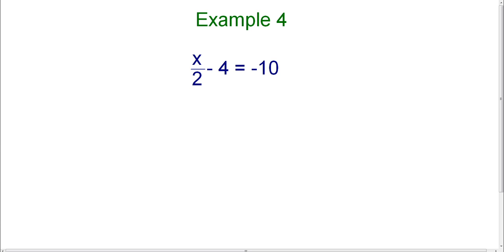This equation is a two-step equation because there are two steps that we need to perform in order to get the variable by itself. I need to get rid of two numbers. I need to get rid of the four and the two, and this is going to require two different steps.